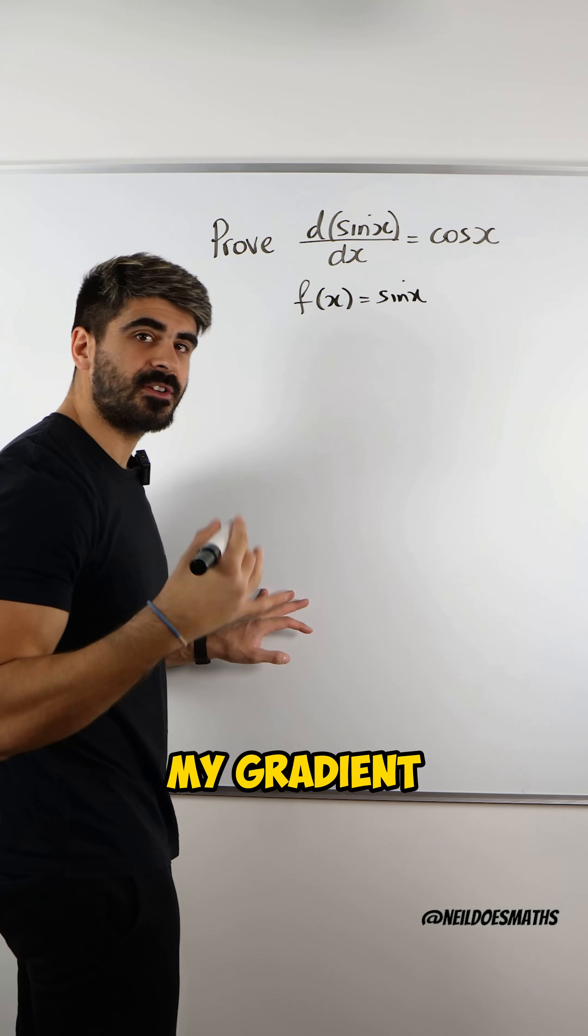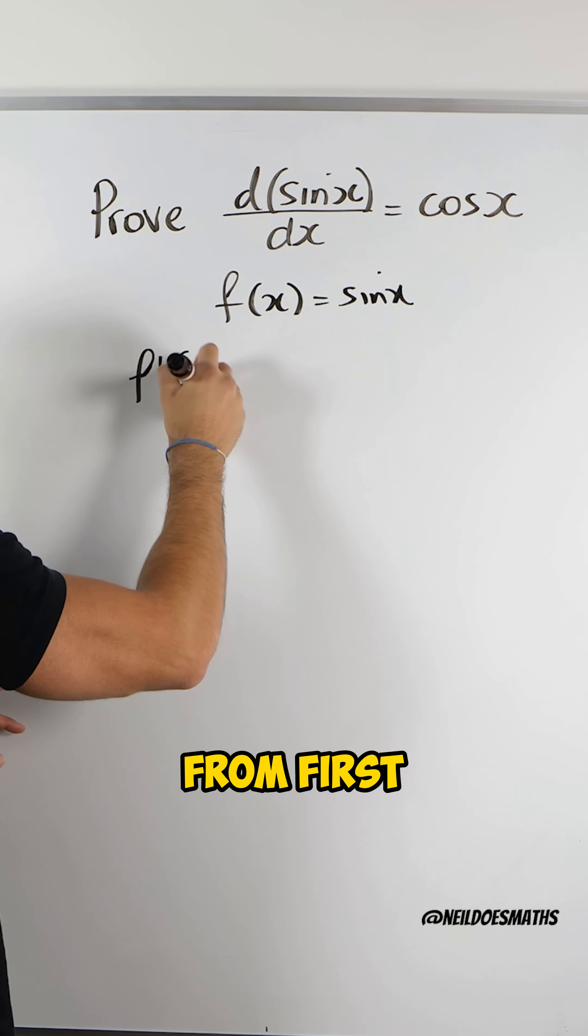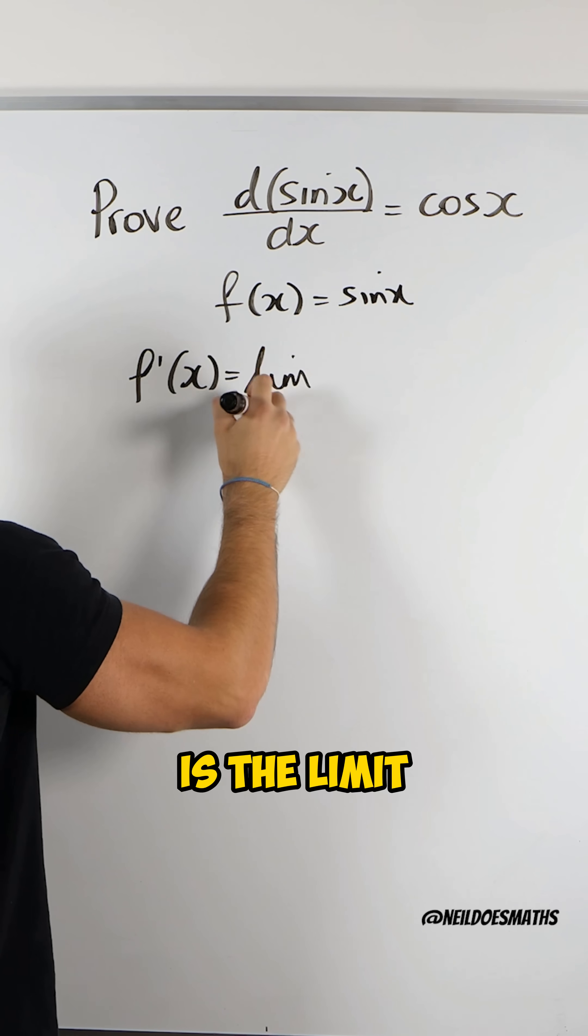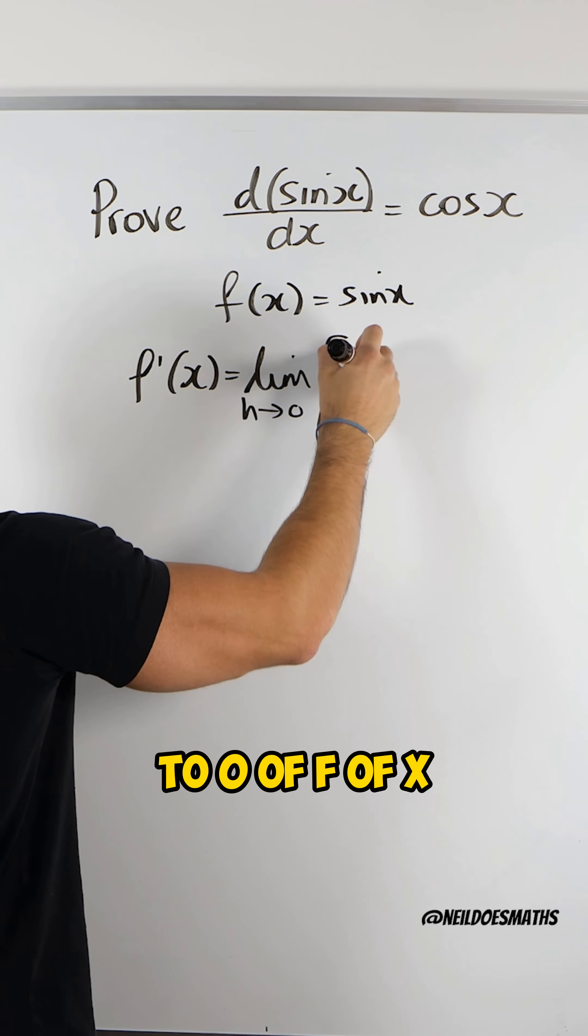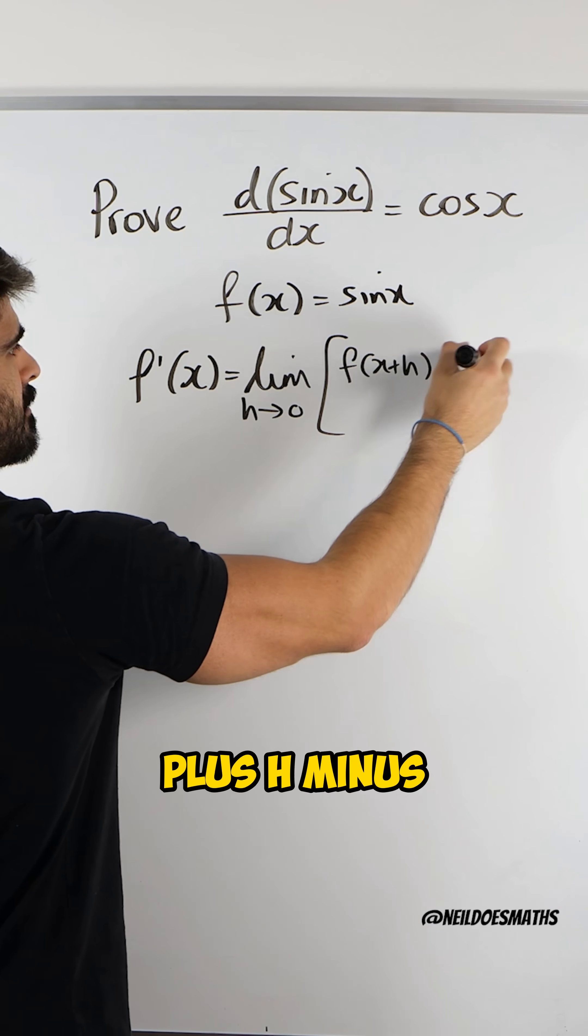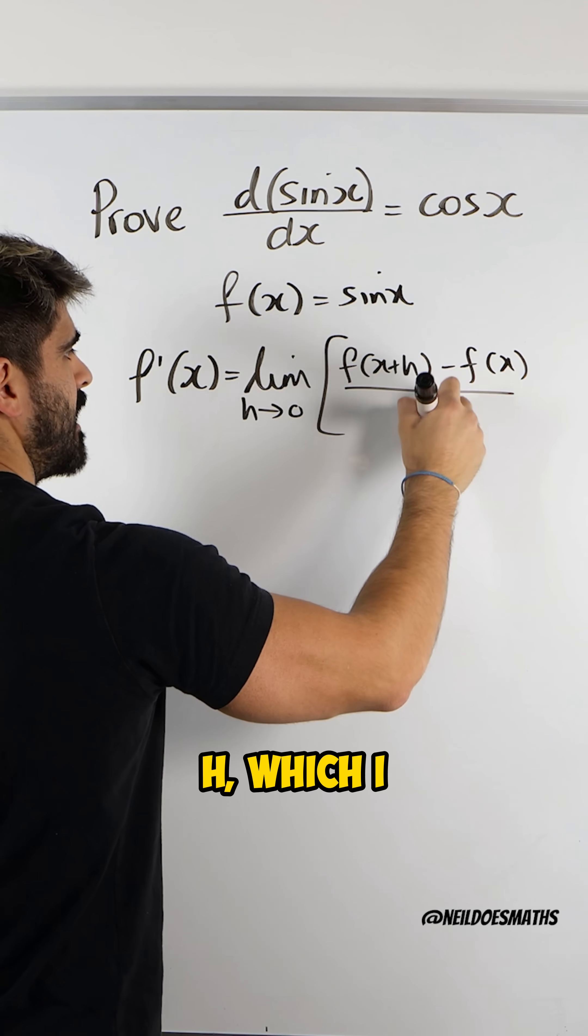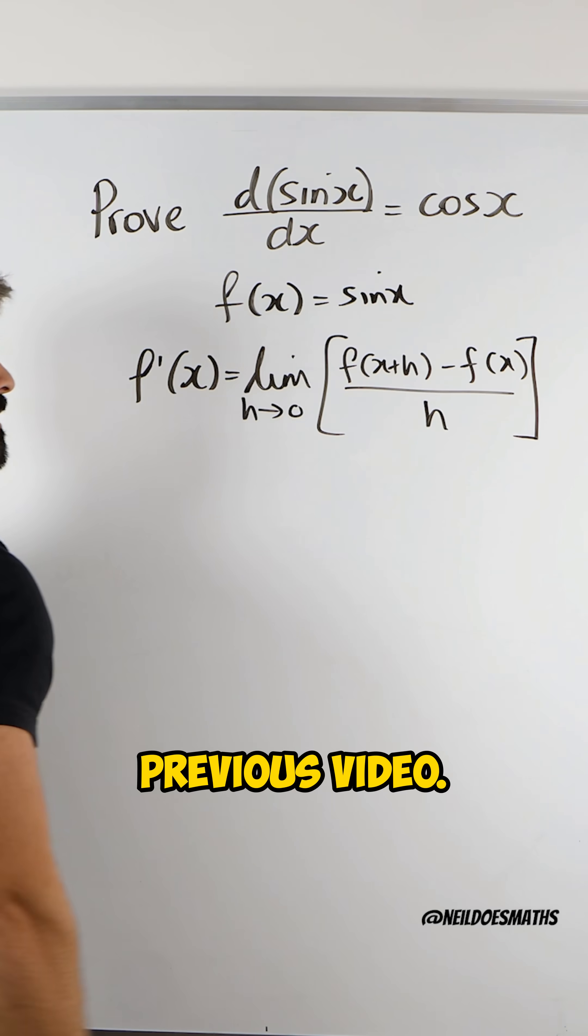My gradient formula from first principles is the limit as h tends to 0 of f(x+h) minus f(x), all divided by h, which I have proved in a previous video.